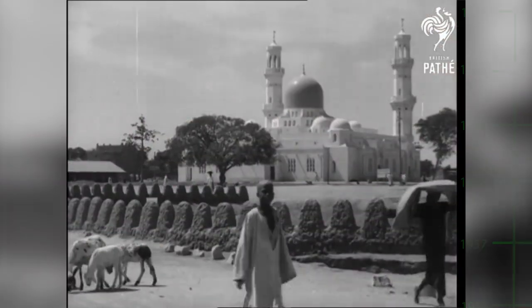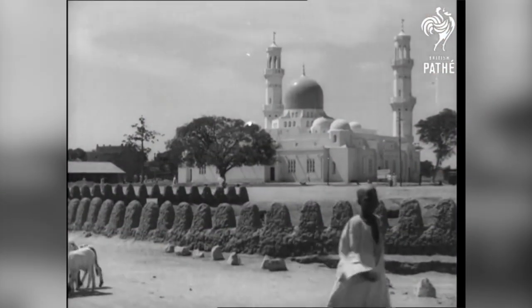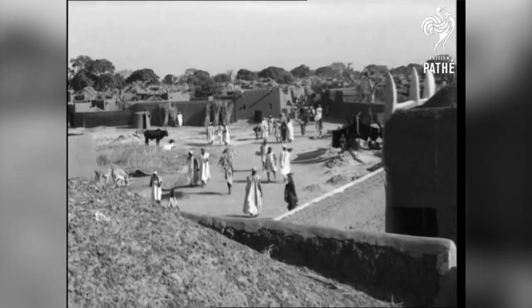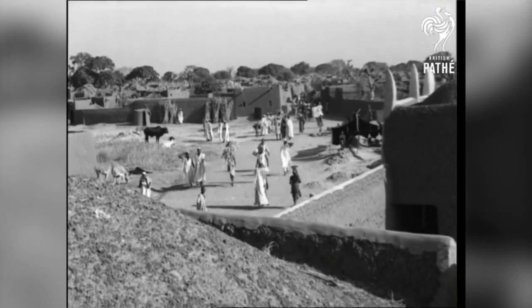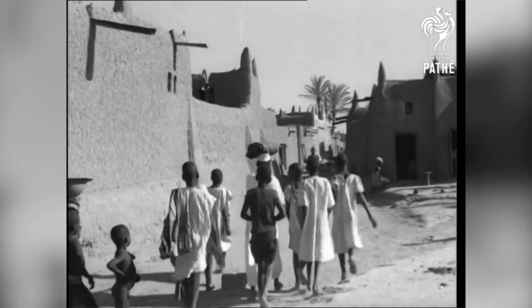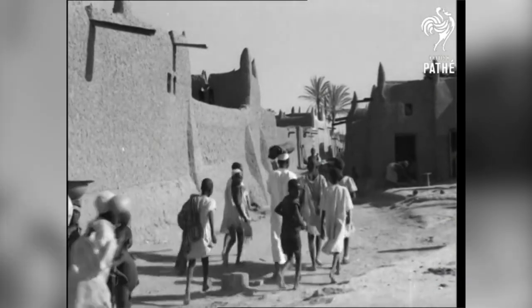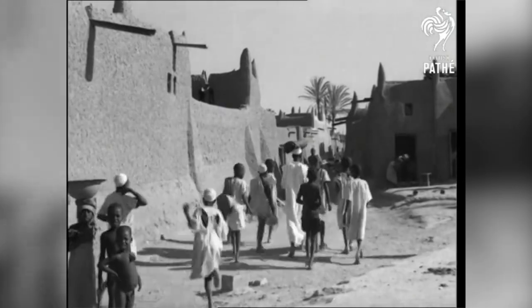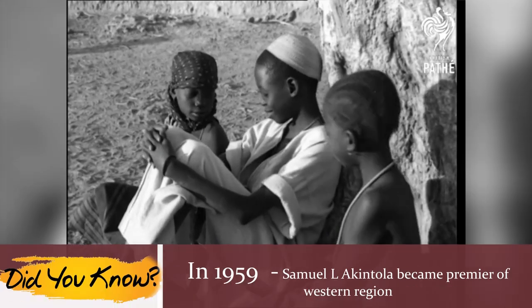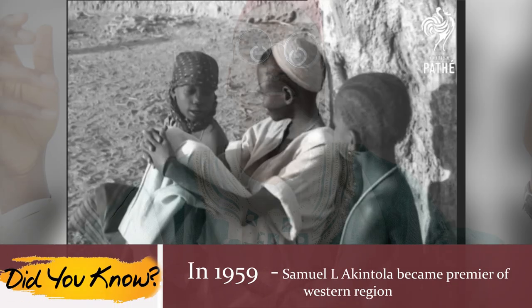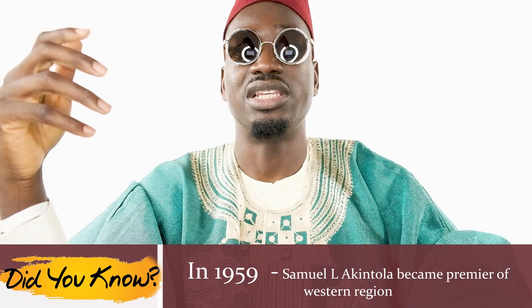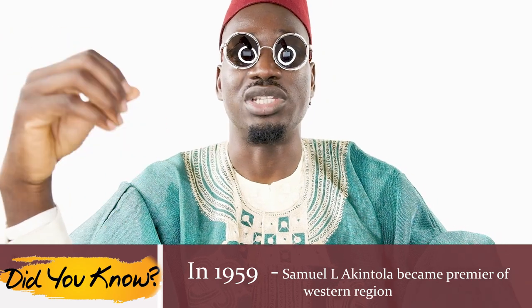In 1959, the North also decided to become self-governing. This was a rush thing — the North were still not ready. They hadn't had nearly as much experience governing in this new way like the South had. Anyways, Nigeria could now have elections for an even bigger and newer house of representatives. This election would determine the makeup of Nigeria's first independent government.